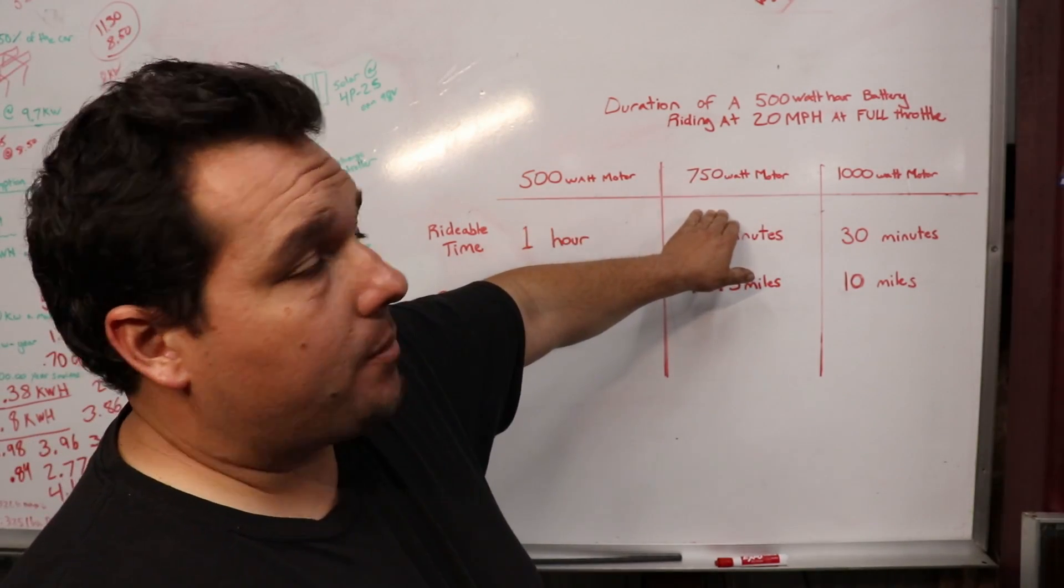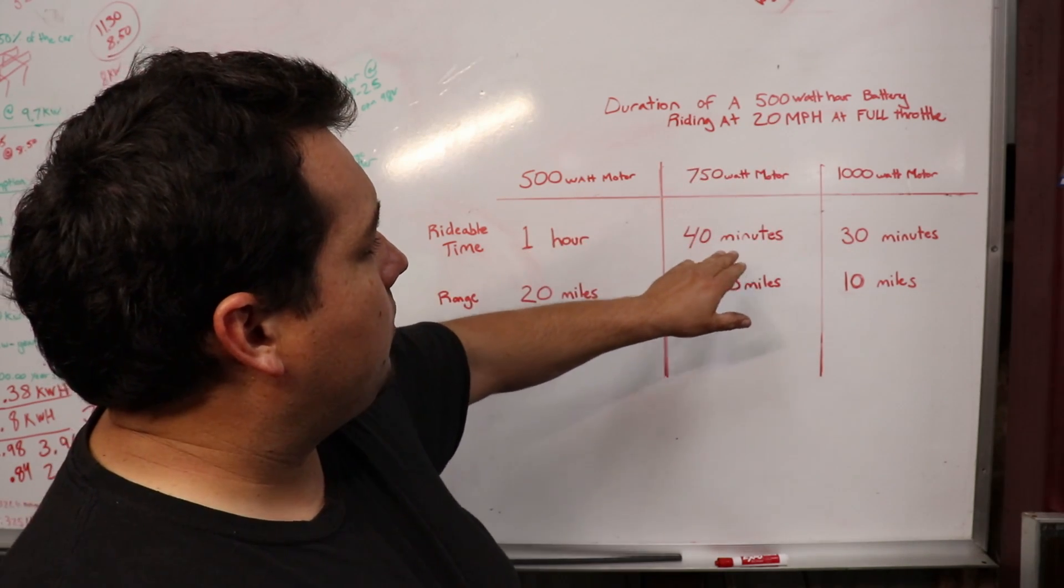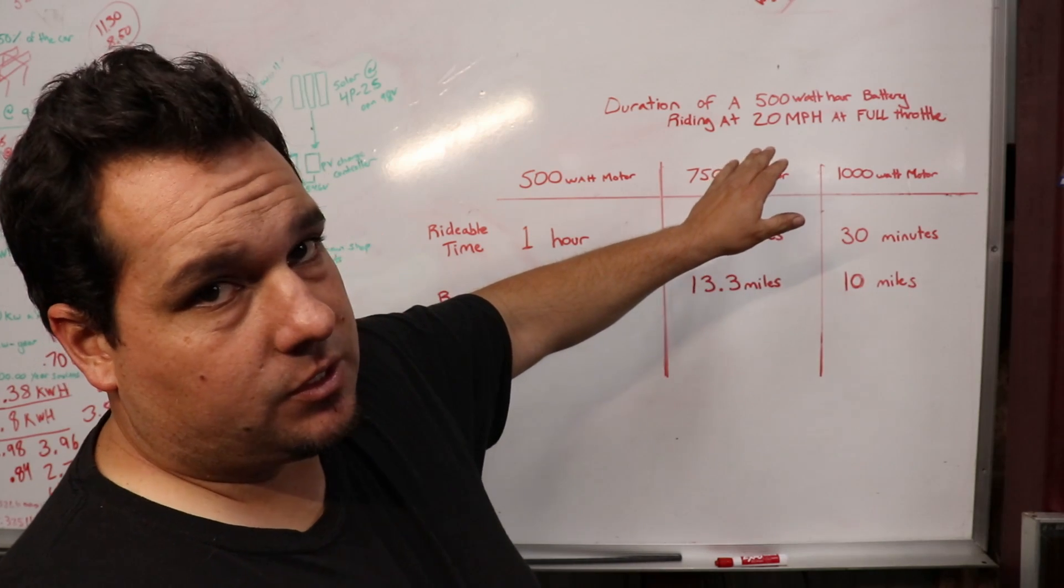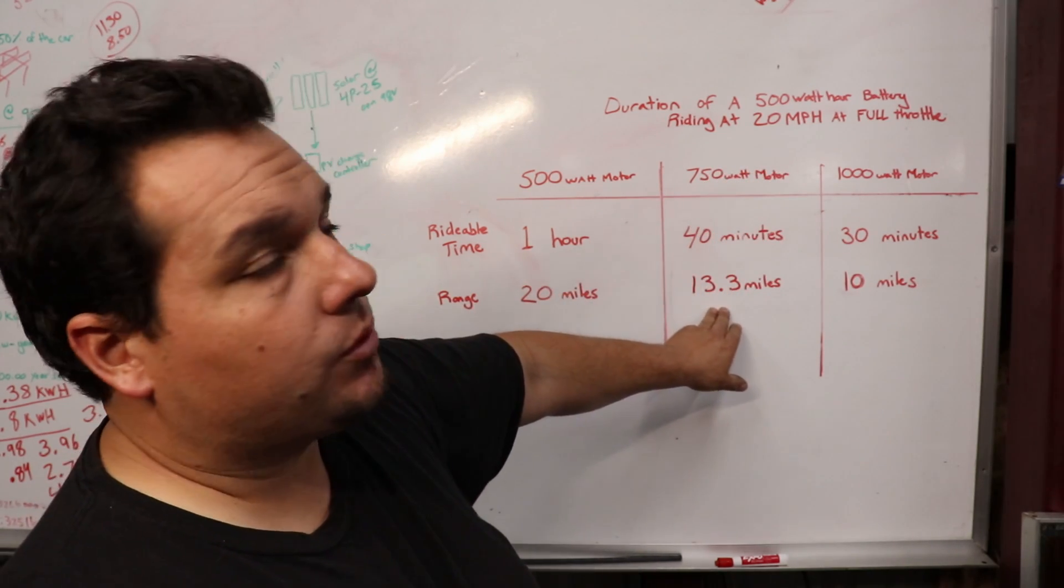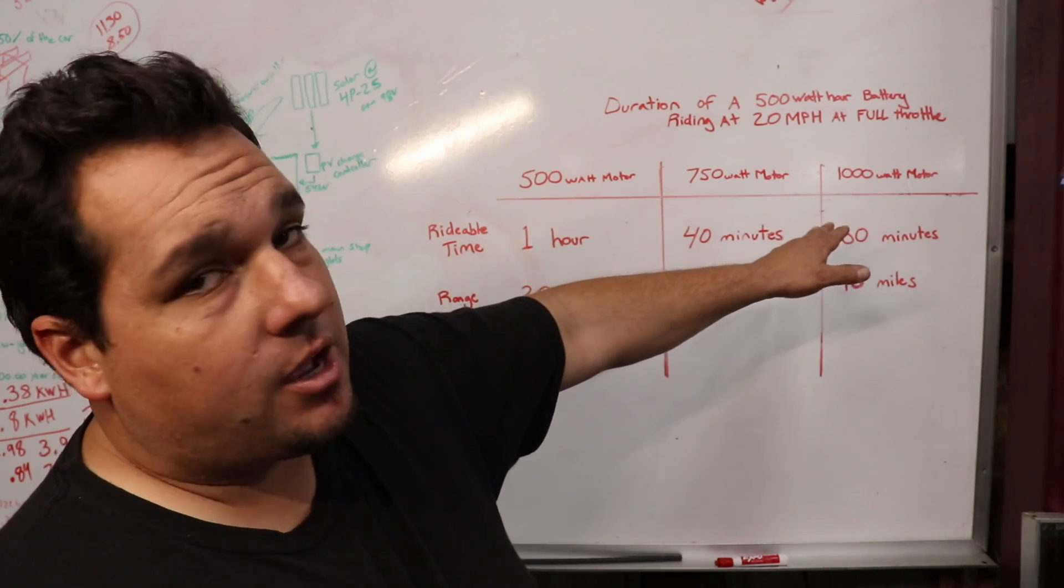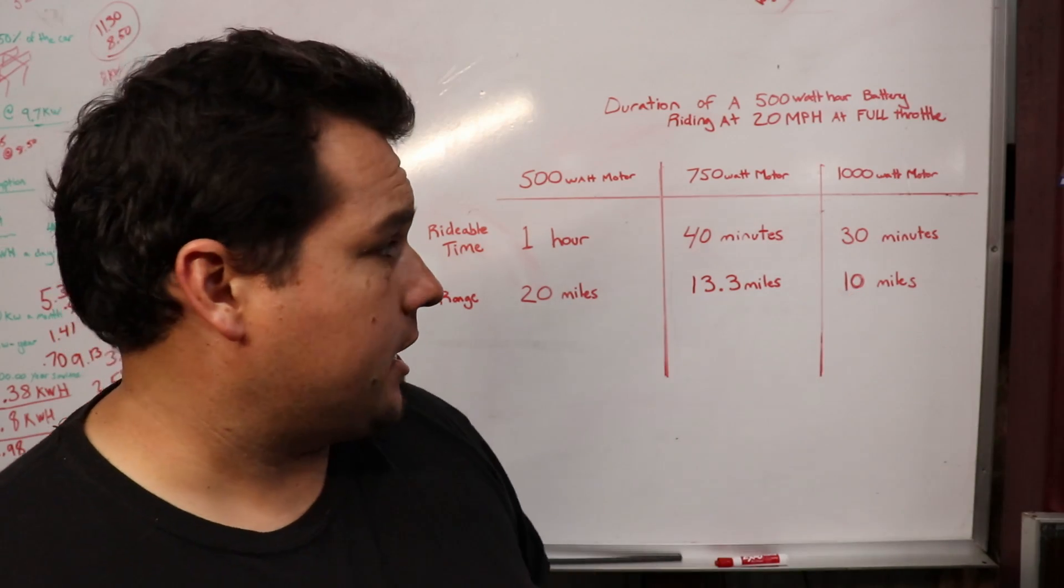Now, if you have a 750-watt motor on that same battery pack, it will cut your time down to 40 minutes, and given this is again at 20 miles an hour at full throttle, that cuts your range down to 13.3 miles. And with a 1,000-watt motor, it's 30 minutes, 10 miles. So you get the idea.